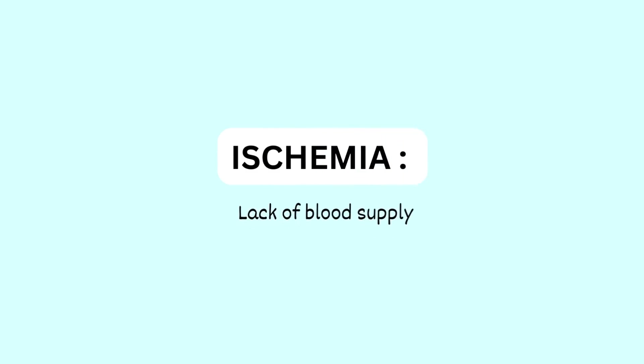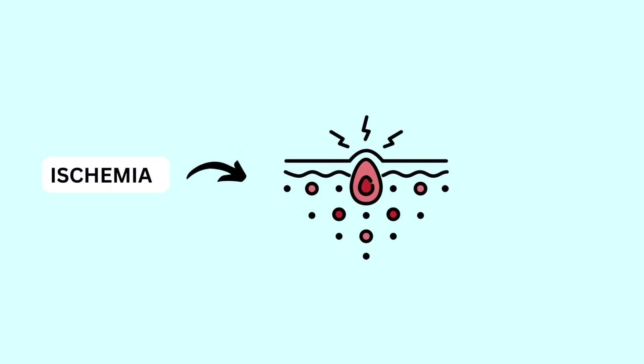The word ischemia means lack of blood supply to a part of the body. Ischemia may cause tissue damage due to the lack of oxygen and nutrients.